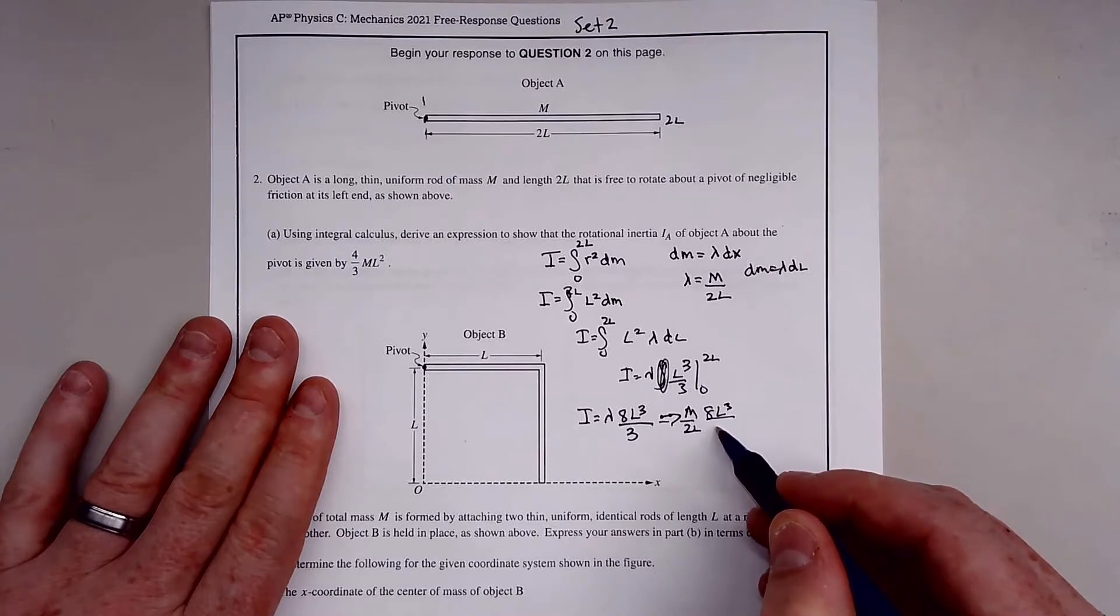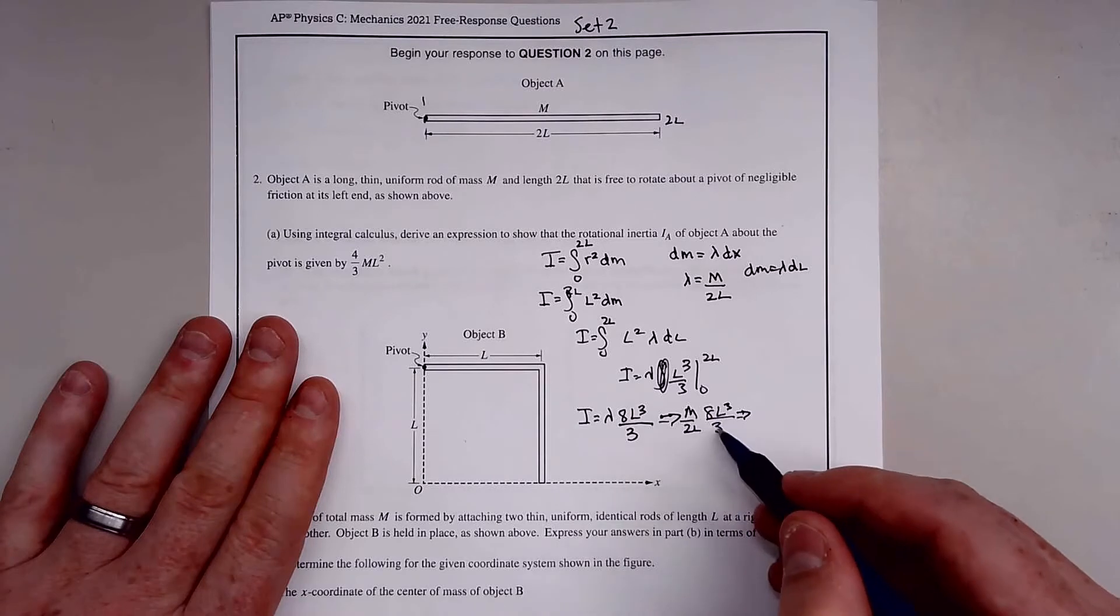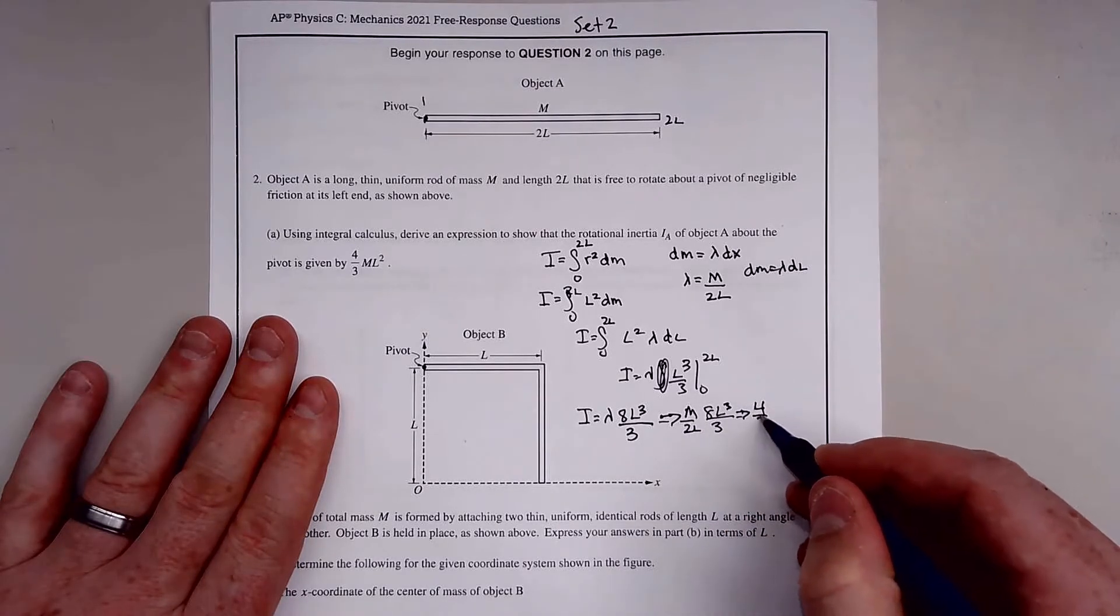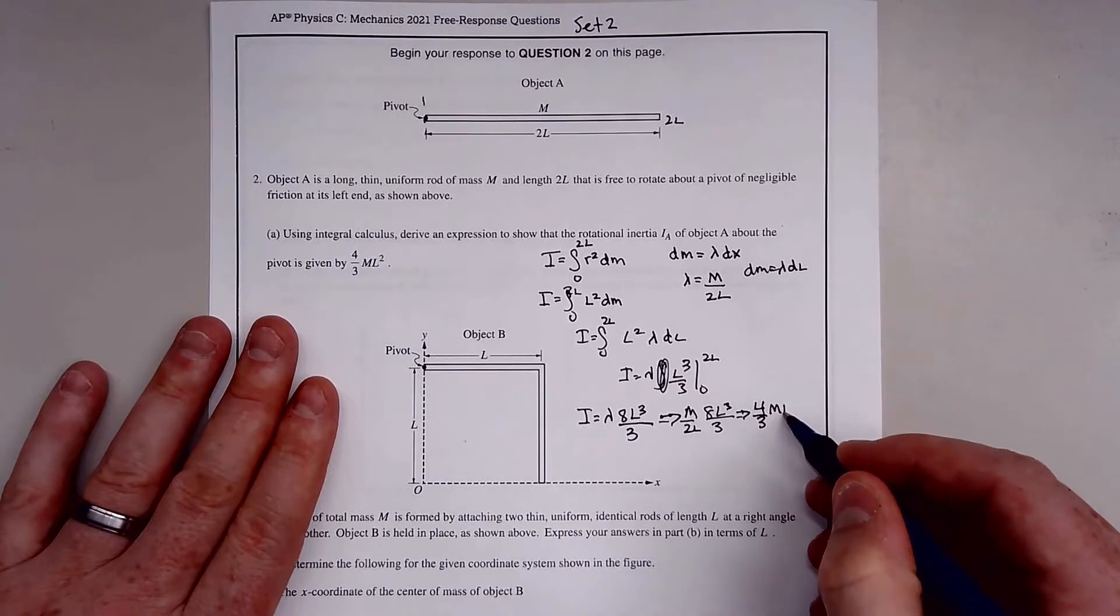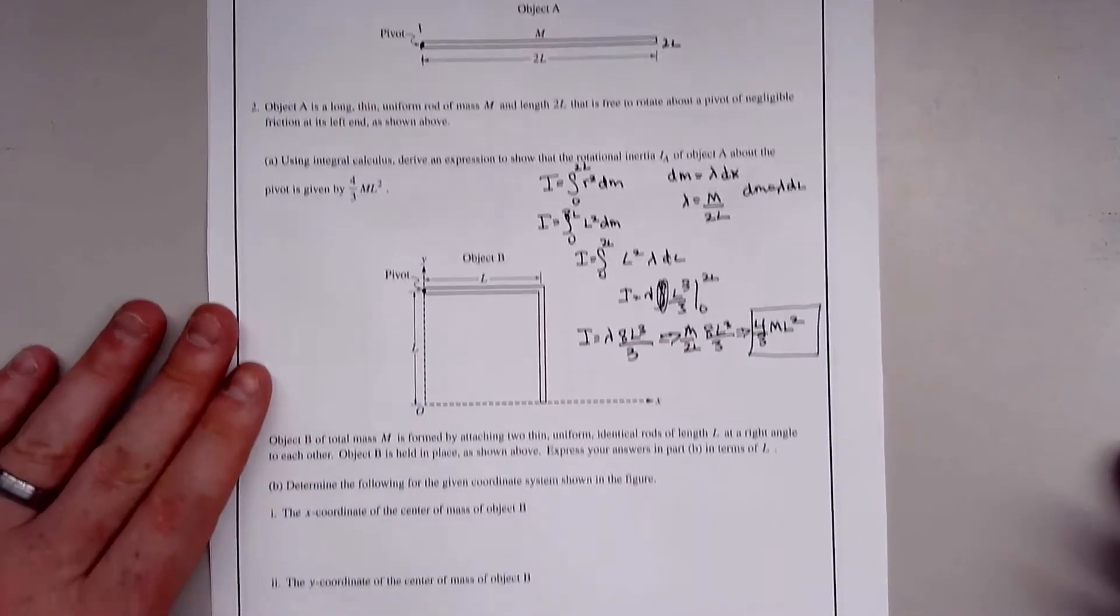The 2 and 8 give us 4, and the 3 stays. One L cancels out, leaving us with 4/3 ML². That backs up what we got. I feel like that would be an acceptable answer for part A to give you full credit.